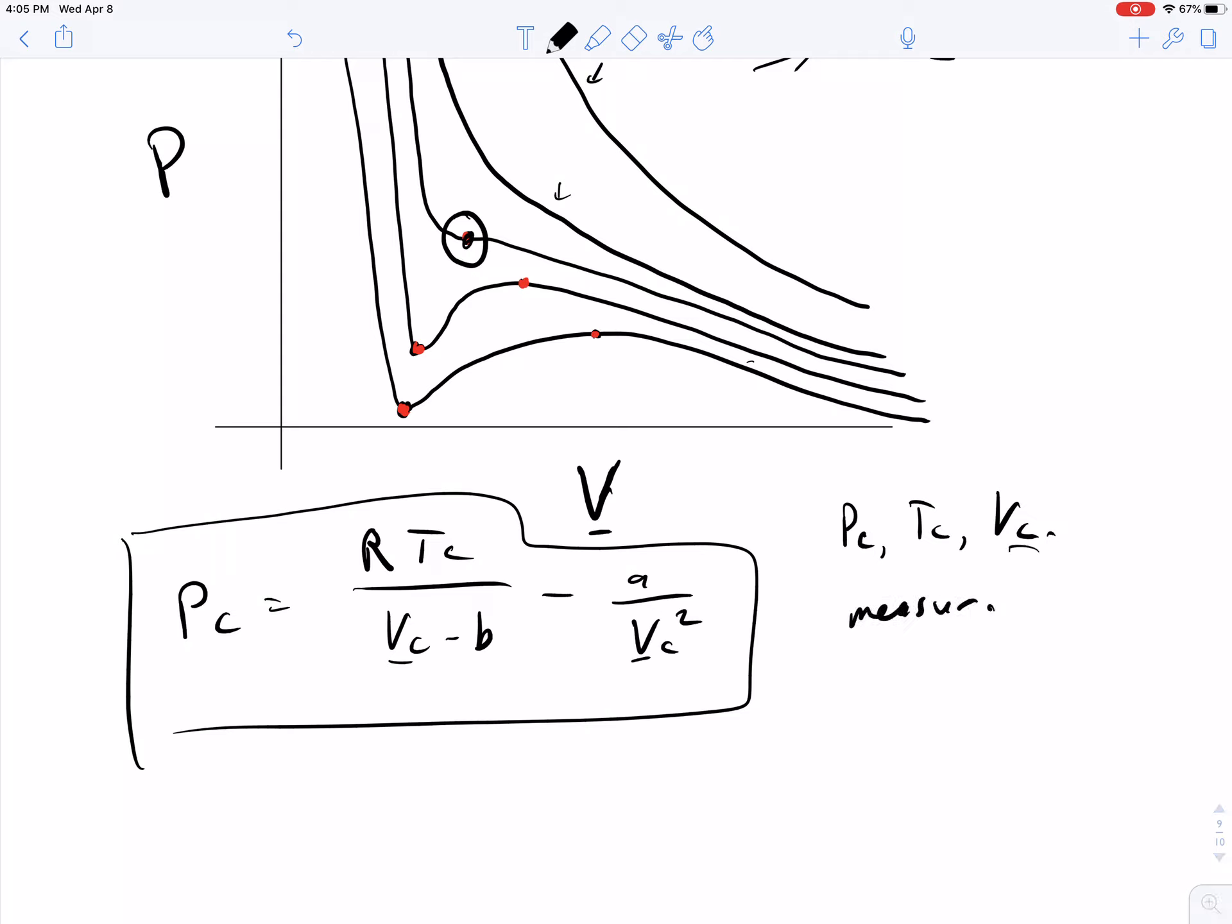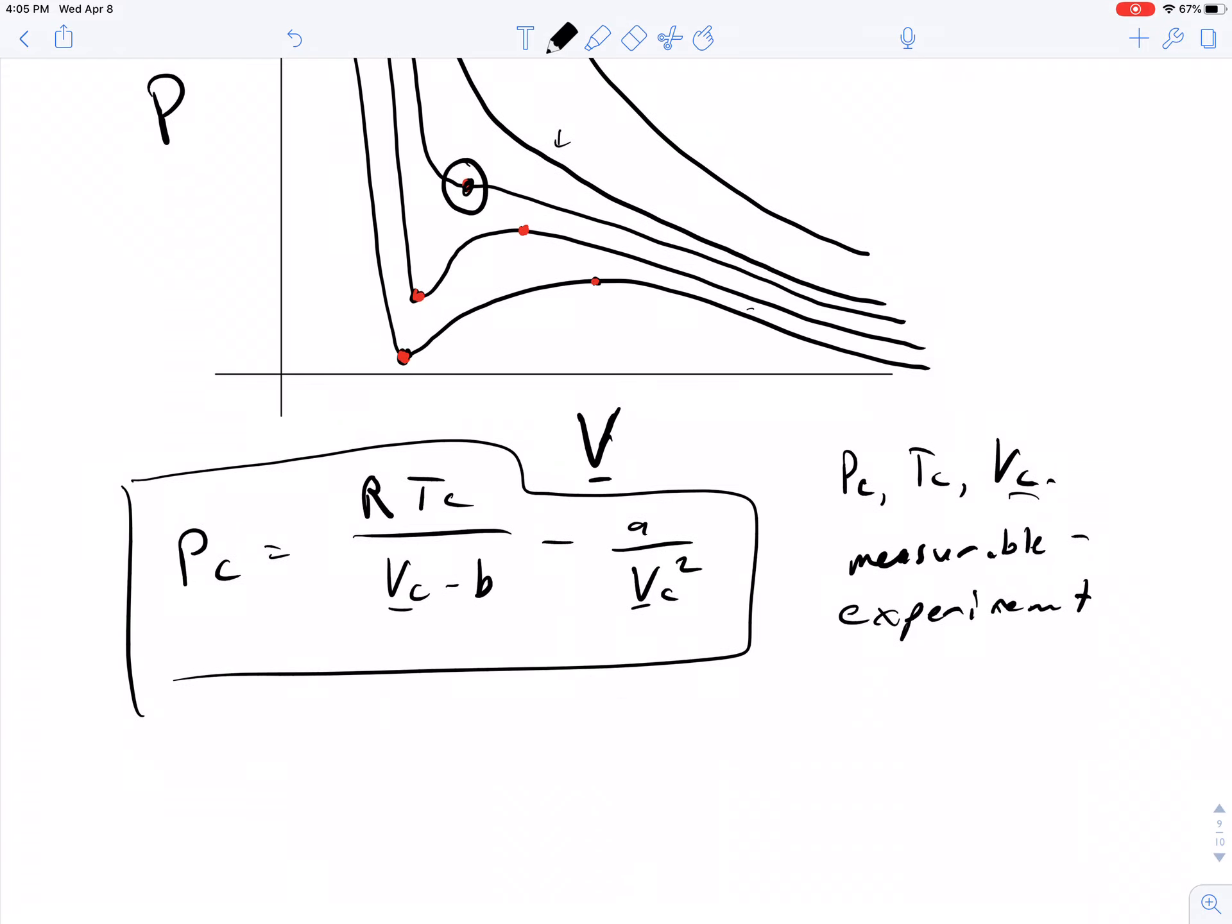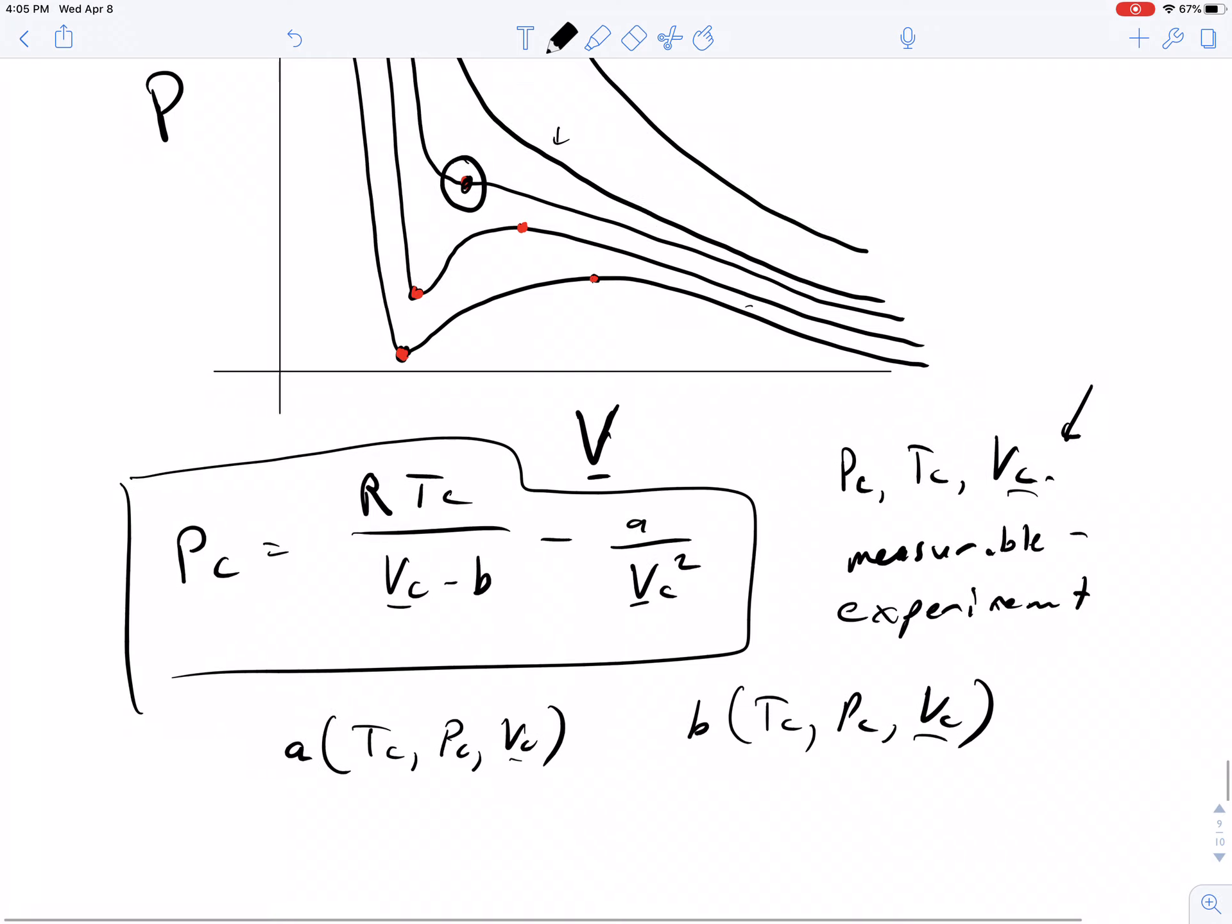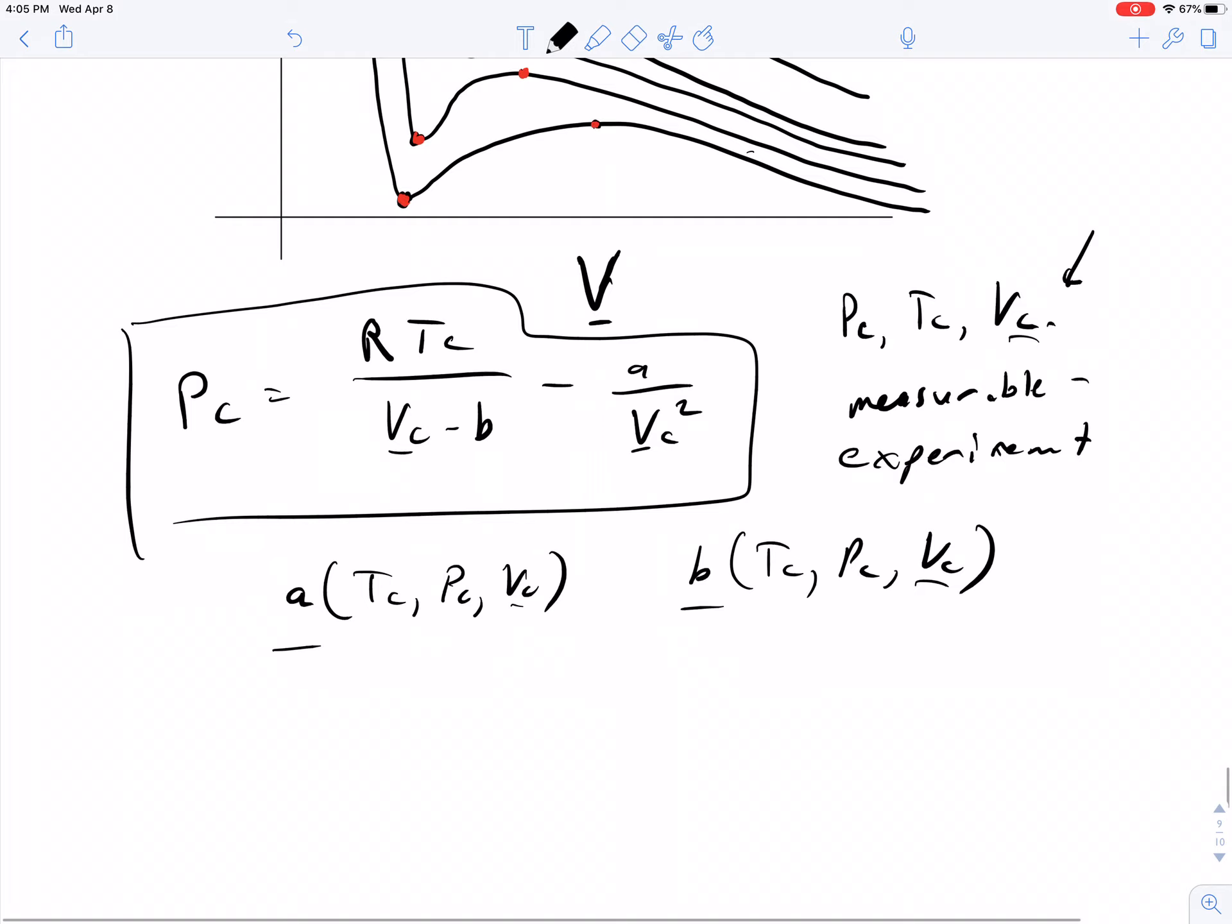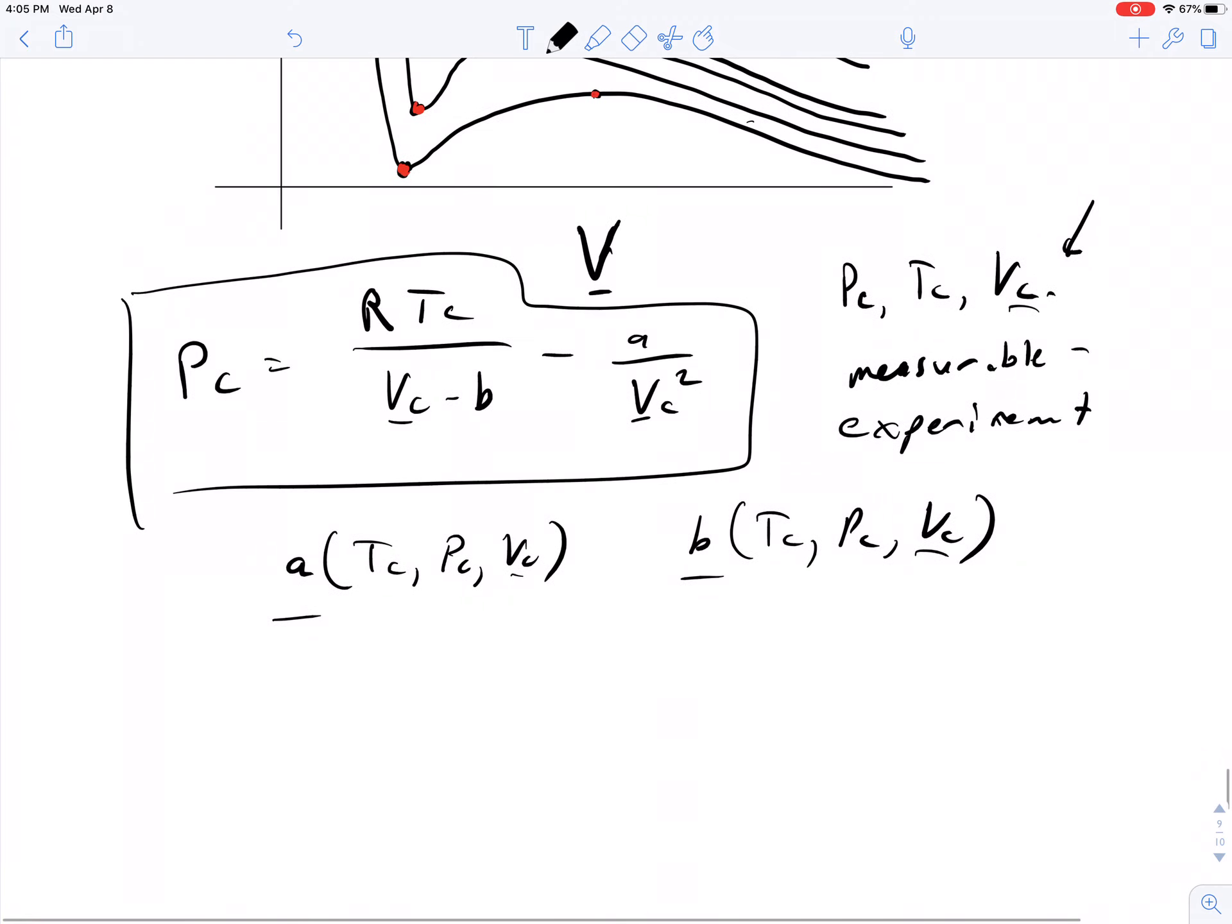You can find this with an experiment and determine the values. Which would be nice because then we can get A as a function of TC, PC, VC, and B as a function of TC, PC, and VC. If we can identify where this point is with an experiment, we can then know what our parameters A and B will have to be so we can predict the behavior in all other regions for this material where we have not yet tested the properties.